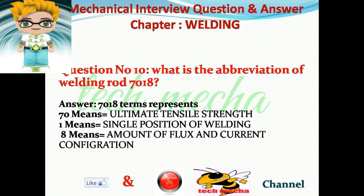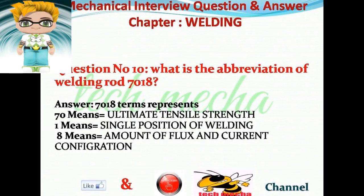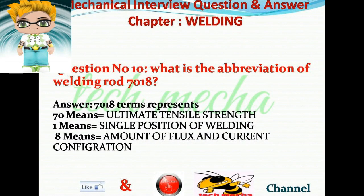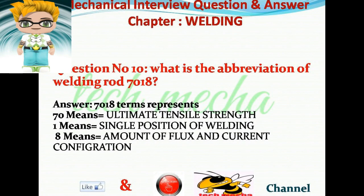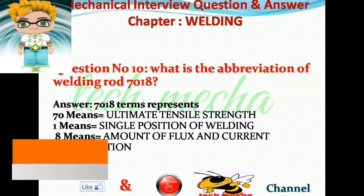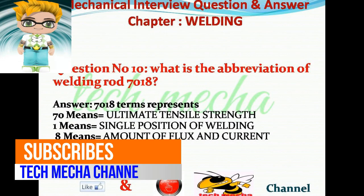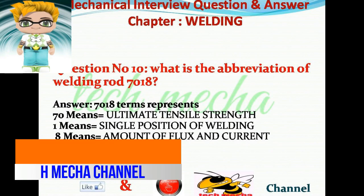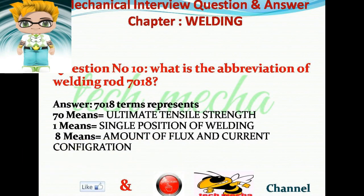Question number ten: What is the abbreviation of welding rod 7018? Answer: 7018 — 70 means ultimate tensile strength, 1 means single position of welding, 8 means amount of flux and current configuration.